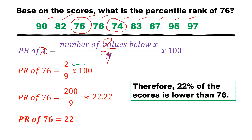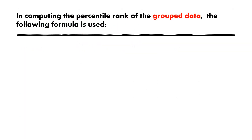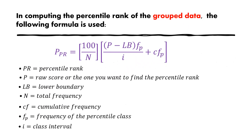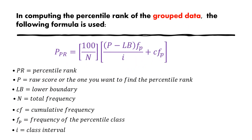That is how we determine the percentile rank for ungrouped data. Now, how about for grouped data? In computing the percentile rank of grouped data, the formula is: PR = (100 / n) × [(P − lb) × fp / i + cf], where PR is percentile rank, P is the raw score, lb is the lower boundary, n is the total frequency, cf is the cumulative frequency below, fp is the frequency of the percentile class, and i is the class interval.